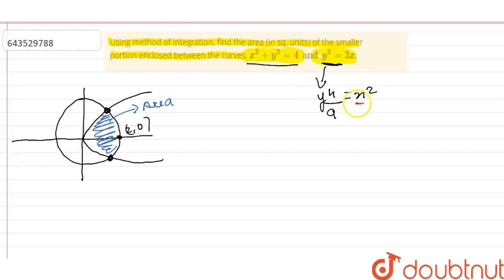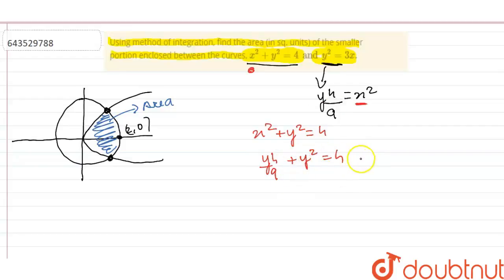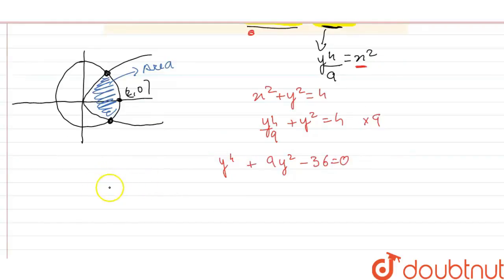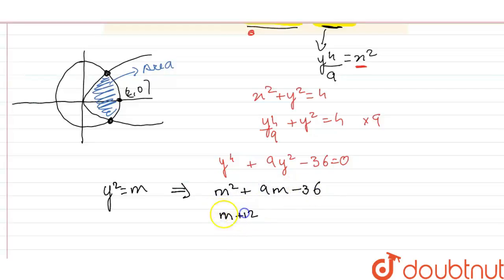We substitute x² = y⁴/9 into the circle equation x² + y² = 4, giving y⁴/9 + y² = 4. Multiplying through by 9 gives y⁴ + 9y² − 36 = 0. This is a bi-quadratic equation. We substitute m = y², giving m² + 9m − 36 = 0, which factors as (m + 12)(m − 3) = 0.